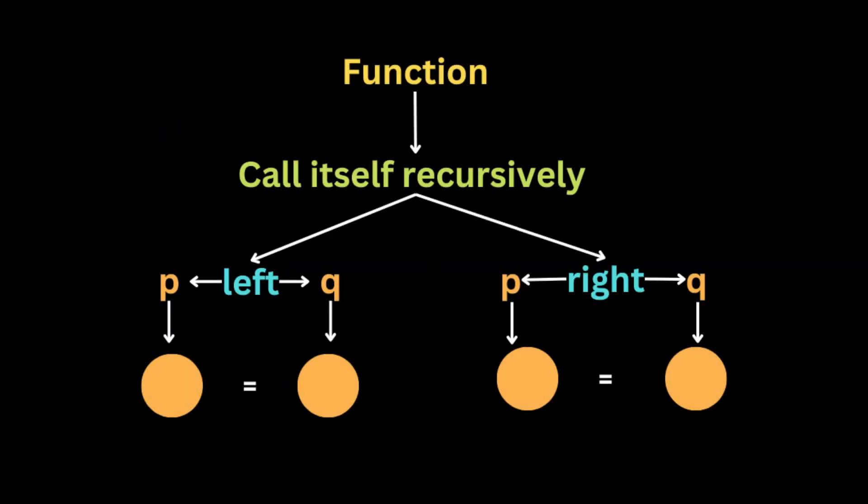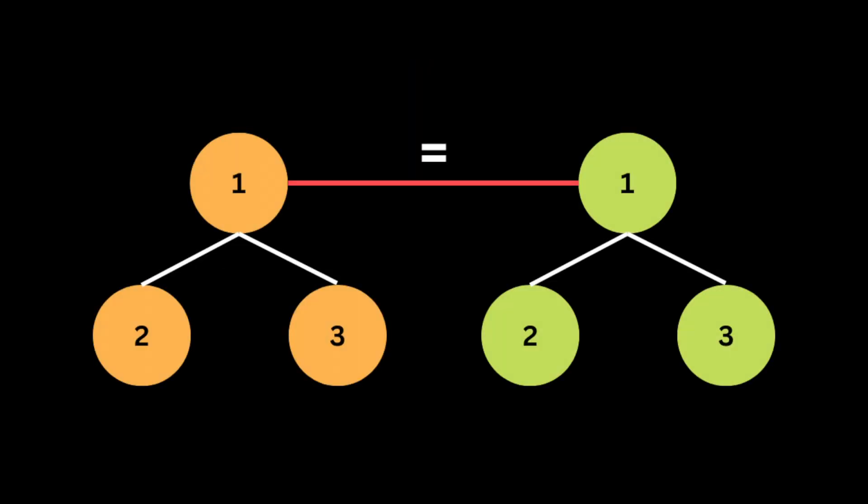In simple terms, the function will keep calling itself recursively on the left and right subtrees, and at each call it's going to compare the values of the node at each level. We also check if both nodes are present or not. Let's take an example so you can visualize how recursion works.